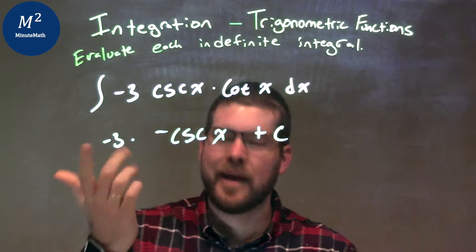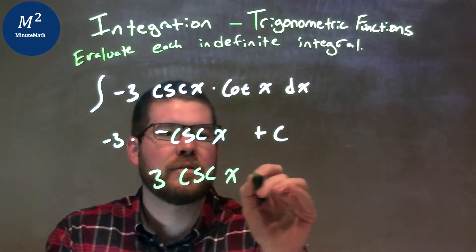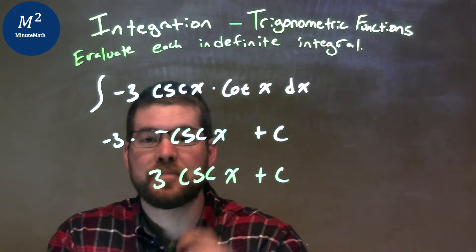So now the negatives cancel to a positive. Our final answer is just 3 cosecant x plus C. And there we have it.